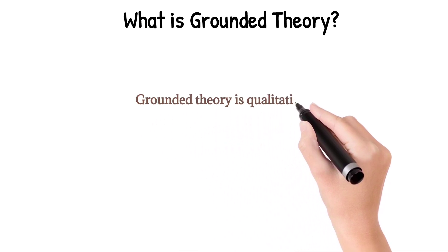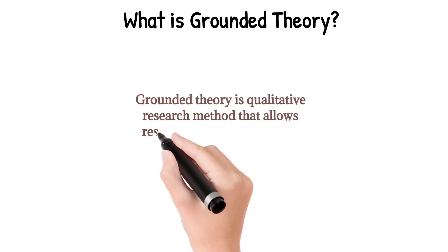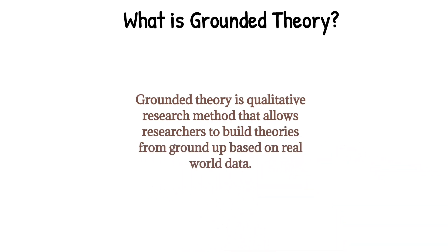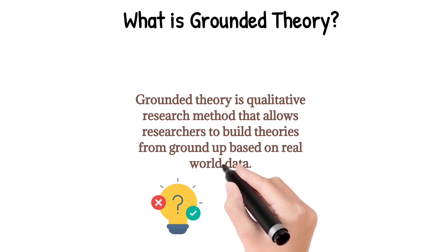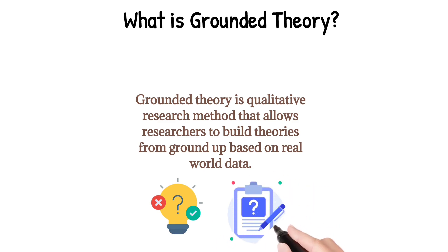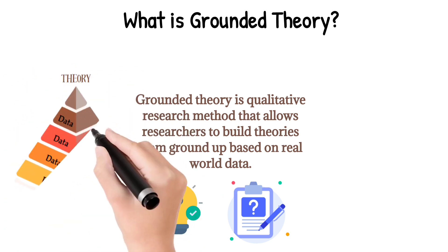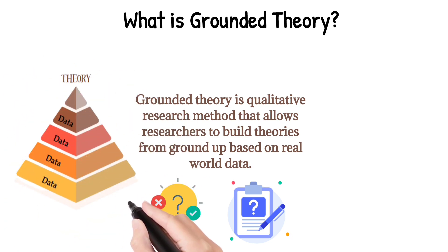Grounded theory is a qualitative research method that allows researchers to build theories from the ground up, based on real-world data. Unlike other research methods that start with a hypothesis, grounded theory starts with data collection and lets the theory emerge from that data. As you can see in the pictures of this pyramid, data is in the lower blocks of it. After sufficient data is gathered and analyzed, then we get a theory on top of this pyramid.